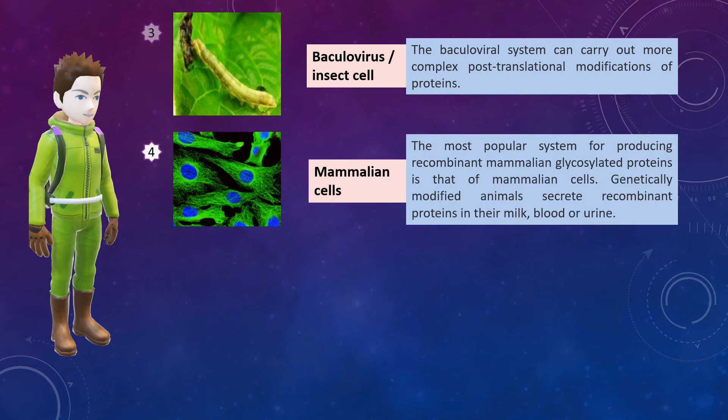Next we have certain mammalian cells. Mammalian cells are used to produce recombinant mammalian glycosylated proteins which cannot be expressed in a eukaryotic system. The genetically modified animals secrete recombinant proteins in their milk, blood, or urine too.